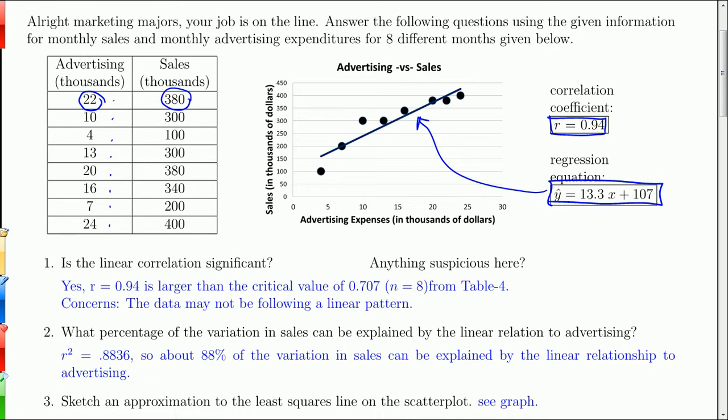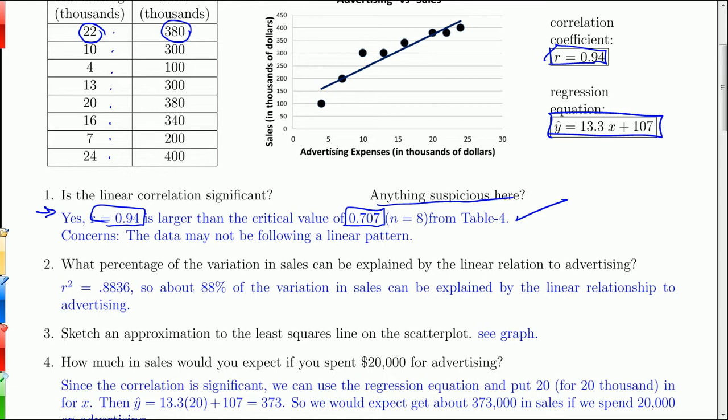Is the linear correlation significant? We just did that. Yes, because the correlation coefficient of 0.94 is larger than the critical value in the back of the book of 0.707 for eight data values. Is there anything suspicious here? If you look at this data without the line, it may not be following a linear pattern. It may be just a little bit curved. But the correlation coefficient is certainly significant enough.